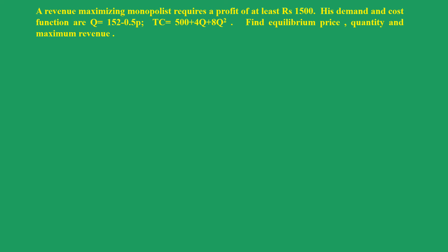First, state what is given in the problem. Demand function: Q = 152 - 0.5p. Cost function: TC = 500 + 4q + 8q². He requires a maximum profit of 1500 rupees.